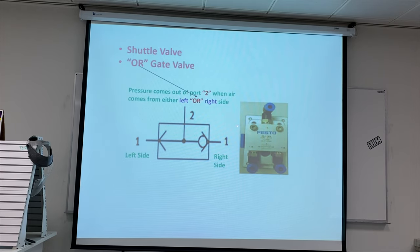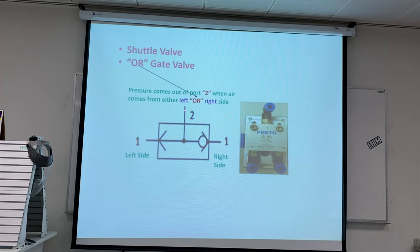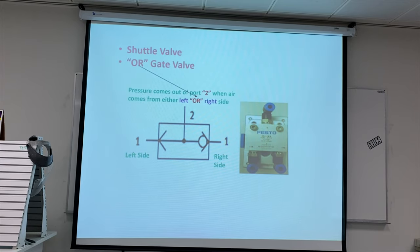Next we have the shuttle valve, also called the OR gate. In the shuttle valve, only one side needs air to enter. If air enters from the left side, it activates output port 2. Similarly, if air enters from the right side, it also activates output port 2. This is the shuttle valve symbol and its position.